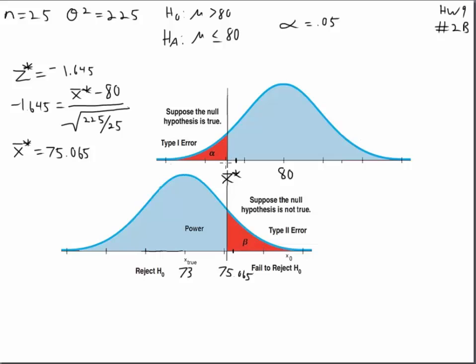But if we get a number less than x bar star, then we're going to reject the null hypothesis, and it turns out that the null hypothesis was false. So we're correctly rejecting a false null hypothesis, and that gives us power. So a number like 74, we would be rejecting this false null, and that would count toward our power.